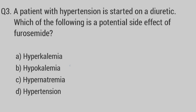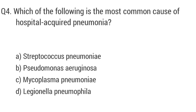Question number four. Which of the following is the most common cause of hospital-acquired pneumonia? The right answer is option B: Pseudomonas aeruginosa.